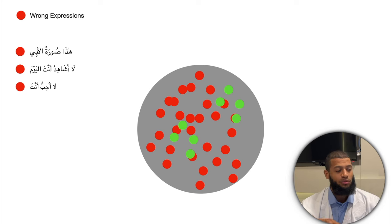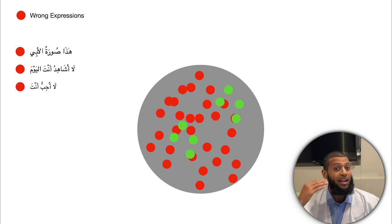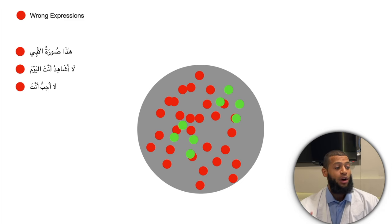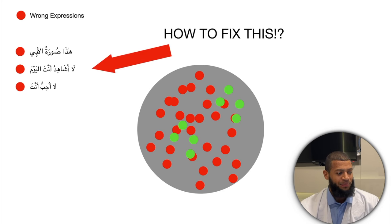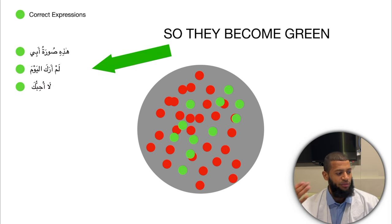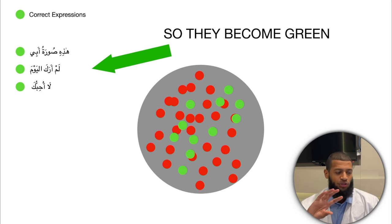However, the rest of your expressions might be ones you made up from vocabulary you've learned, or ones you heard and thought you were repeating correctly but are not. For example, 'hadha suratu al-abi' — there are grammatical mistakes here. You might know what 'hadha,' 'surah,' and 'abi' each mean, but you don't know that 'hadha' should be 'hadhi,' and that you cannot have ya al-nisbah with alif and lam.